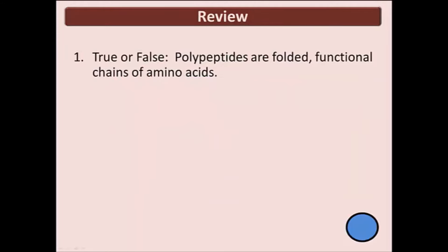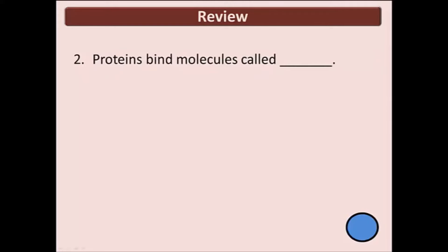We will now have a review over polypeptides, amino acids, and their structures. There is a five-second countdown at the bottom right of the screen — pause the video if you need time to answer. True or false: polypeptides are folded functional chains of amino acids. This is false — polypeptides are linear and non-functional. Proteins bind molecules called what? Proteins bind ligand molecules.